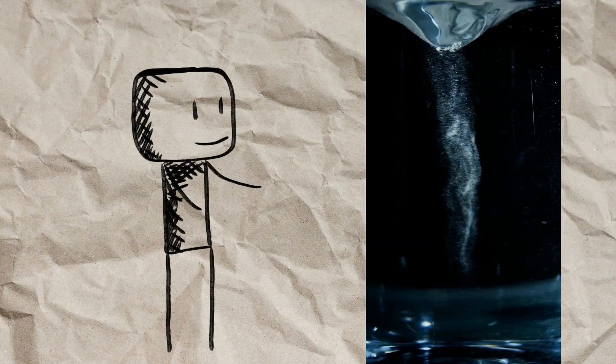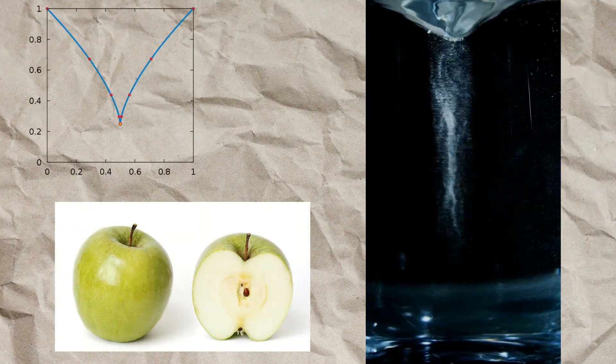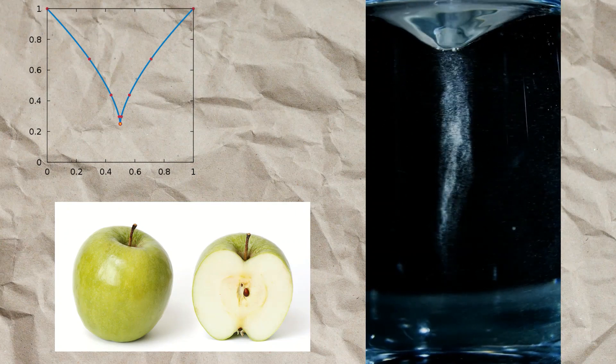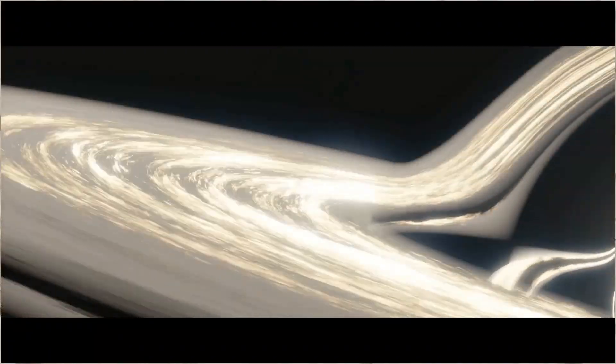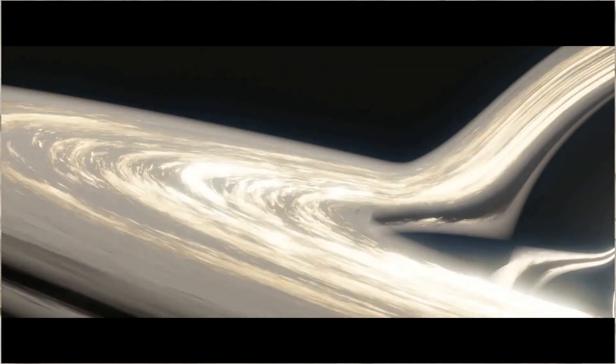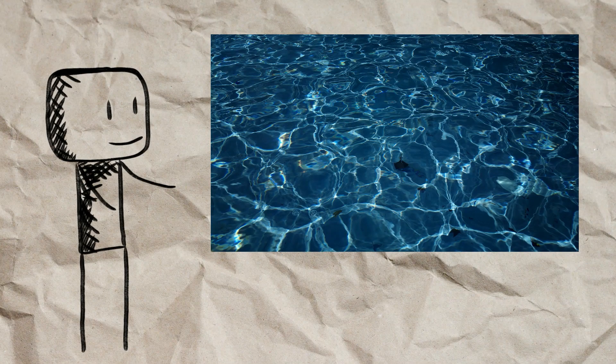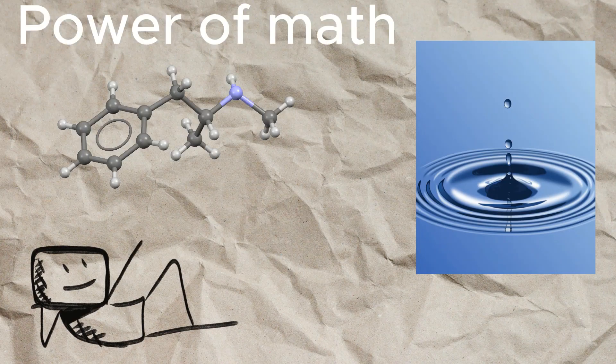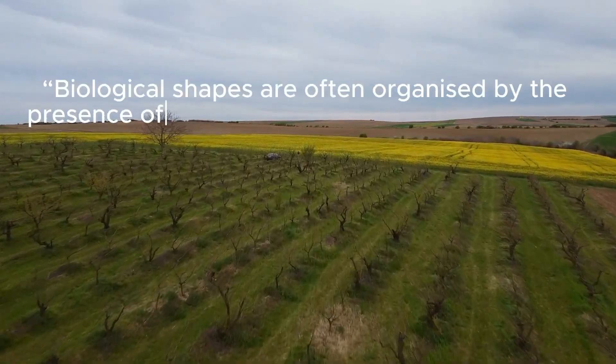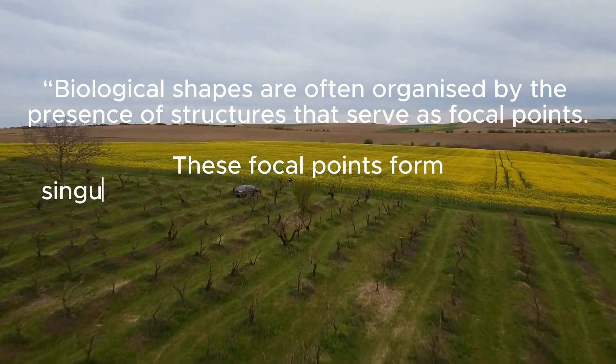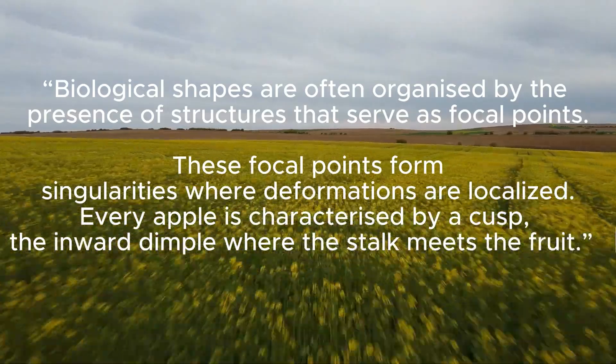Think about the little shape of the whirlpool that forms when water is going down the drain. It kind of resembles the shape of the apple—they have a unique cusp. If you draw an outline of an apple, one could immediately spot it. It sounds like everything is being pulled to a singular point, a singularity, like a black hole. There is a mathematical theory called singularity theory that is used to explain everything from black holes to light that forms at the base of a pool and even droplet break-up. To quote: 'The cusp of the apple—biological shapes are often organized with the presence of structures that serve as focal points. These focal points form singularities where deformities are localized. Every apple is characterized by the cusp, or dimple, where the stalk meets the fruit.'